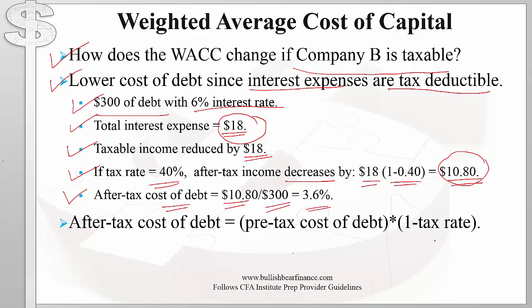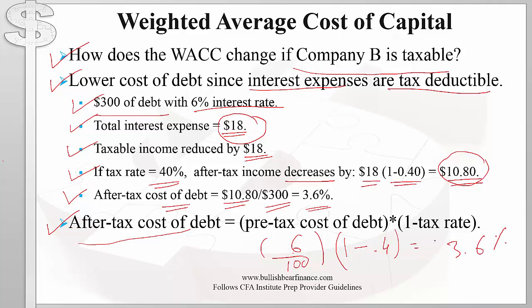This means the after-tax cost of debt is simply the decrease in net income divided by total debt, which is 3.6 percent. In general, the after-tax cost of debt is simply the pre-tax cost of debt — which was six percent in our example — times one minus the tax rate, giving us 3.6 percent as the after-tax cost of debt.